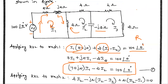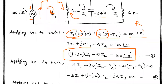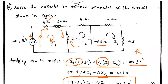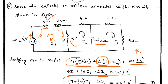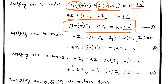For the second mesh, writing the KVL equation: the drop across the 4 ohm resistance is 4·i2, the voltage across the capacitor is -j2·(i2 - i3), and the drop across the shared 2 ohm resistor is 2·(i2 - i1). Collecting terms: i1 term gives -2·i1; combining 4·i2 + 2·i2 = 6·i2 and subtracting j2·i2 gives (6 - j2)·i2; and the i3 term is +j2·i3. The second equation is: -2·i1 + (6 - j2)·i2 + j2·i3 = 0.